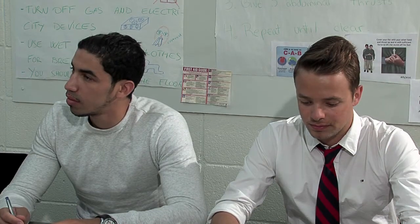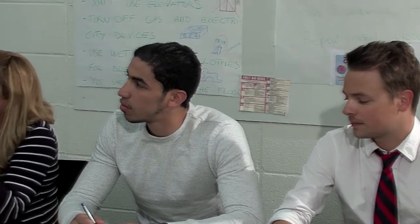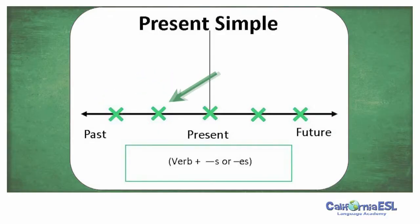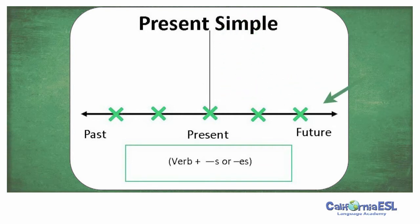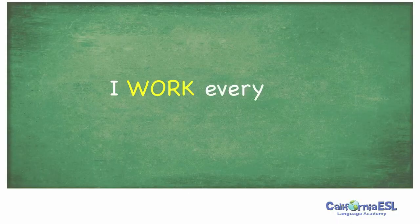So, in a timeline, if this is the past, this is the present, and this is the future — it happens all the time. For example: I work every day.